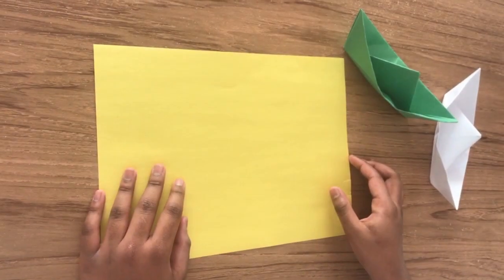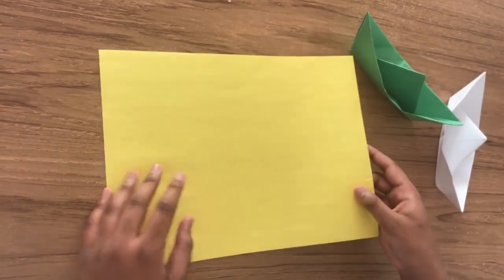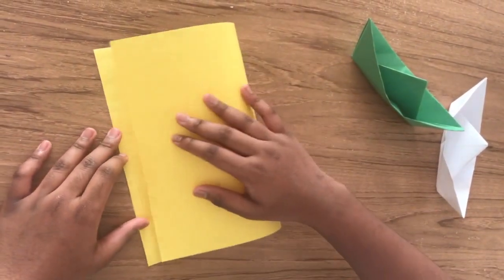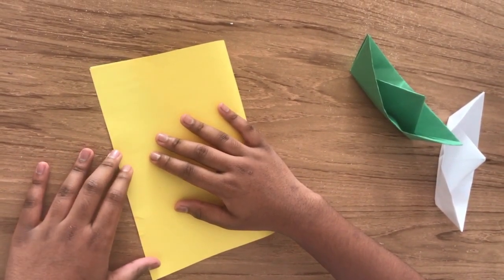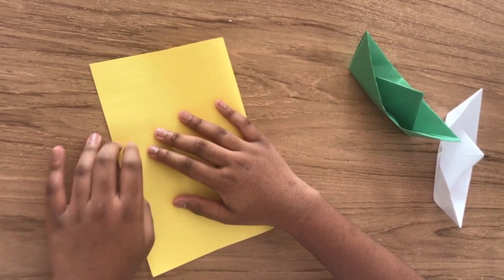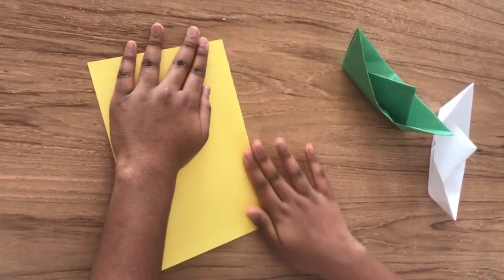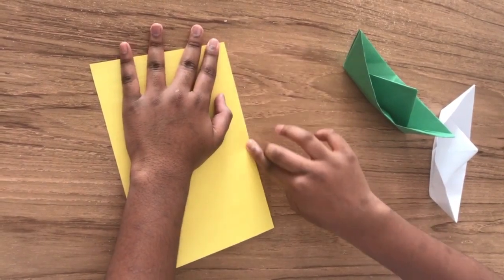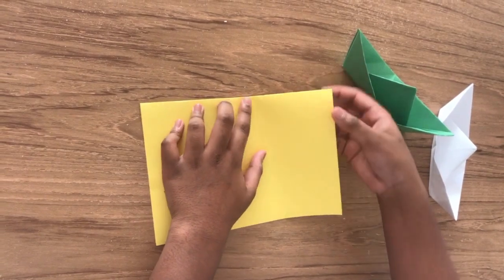So let's begin. Okay, at first you fold this side right here all the way in here. Then you flip the paper over and then fold it again.